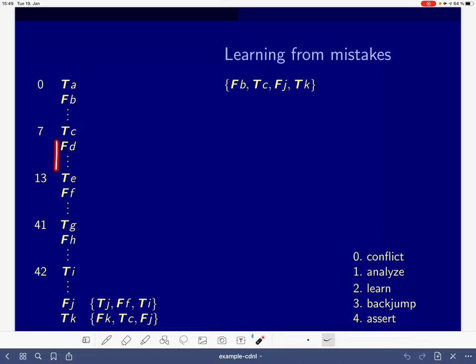Then here we make a choice, we propagate again. We make a choice, we propagate. Again we make a choice, we propagate. Here again we make a choice and propagate, but this is now where a conflict happens. All these levels here, we were making choices and propagating afterwards, but we never detected any conflict. They were conflict-free, so to speak.